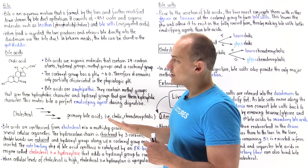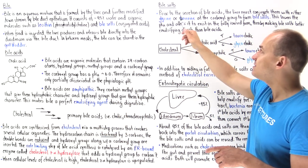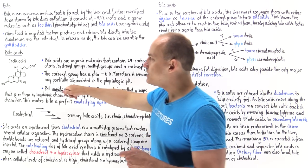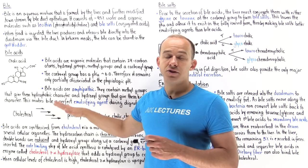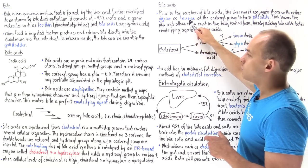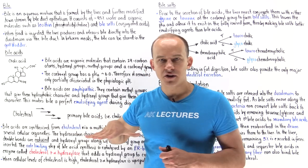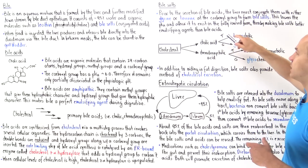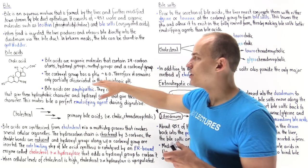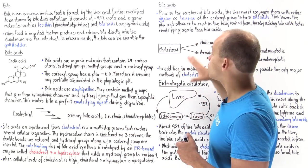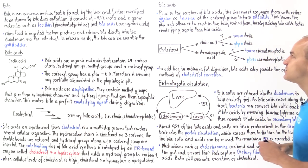Once bile acids are formed, before the liver cells release them, they are conjugated with either glycine or taurine to form bile salts. Bile salts are better emulsifying agents than bile acids because adding glycine or taurine to the carboxyl group lowers its pKa, causing these molecules to exist predominantly in the fully ionized form. The ionized form dissolves better in aqueous solution, allowing bile salts to travel in the blood without a transport molecule, unlike bile acids which require albumin.